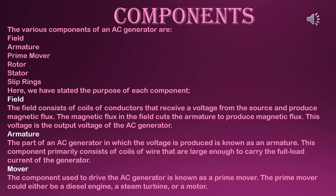The various components of an AC generator are: field, armature, prime mover, rotor, stator, and slip rings.